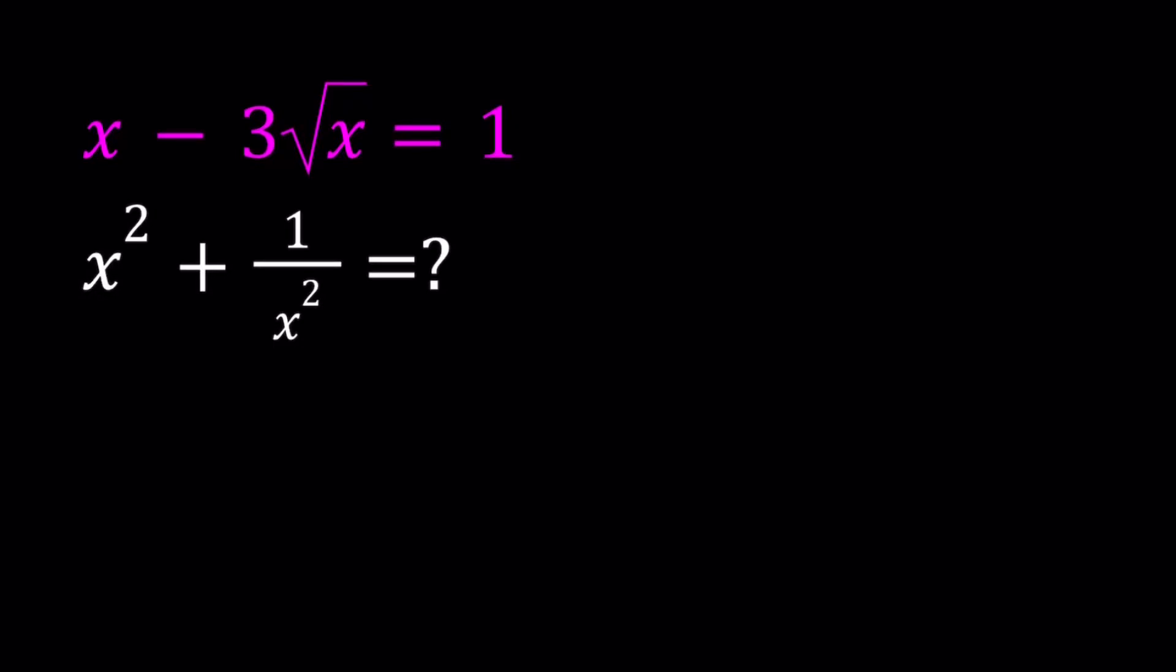Hello everyone. In this video, we're going to be dealing with a radical expression. We are given x minus 3 times the square root of x equals 1, and we're supposed to evaluate x squared plus 1 over x squared. In this case, we want x to be a real number, so we're going to be paying attention to that, and I'll be presenting two methods. Let's start with the first one.